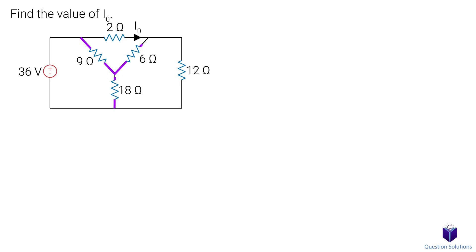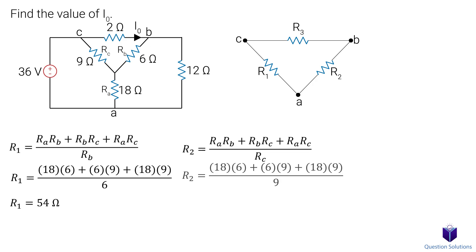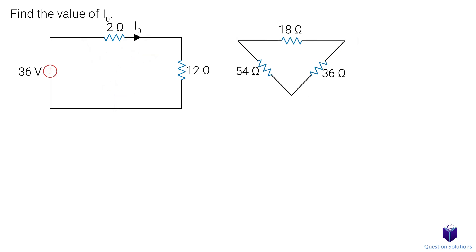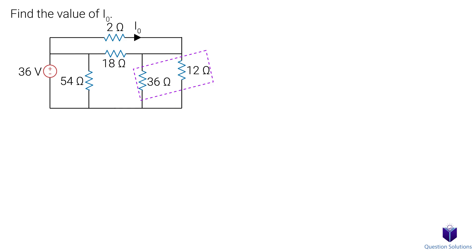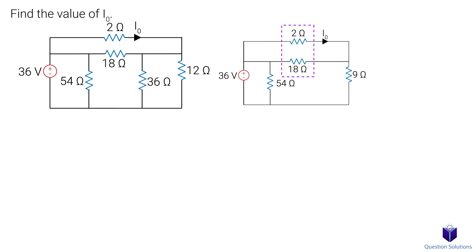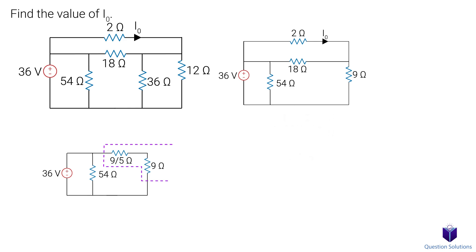Now we can easily see that there is a Y between these resistors, so we can convert it to a delta. Let's label our points and draw a delta on the side. Now we can solve for each resistor. The next step is to replace the Y with the delta. Instead of keeping these wires bent, we can straighten them out. Now we see that these two resistors are parallel to each other, so let's combine them. Again, looking at the circuit, we can see that these two resistors are now parallel, so let's add those together. We can see that these two resistors are in series, so let's add those.